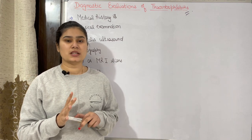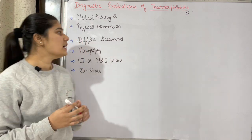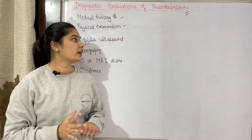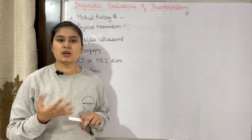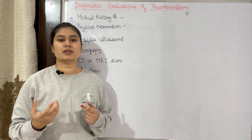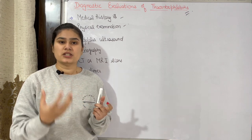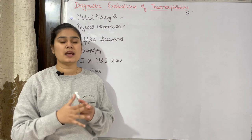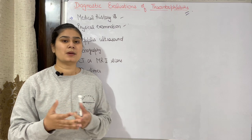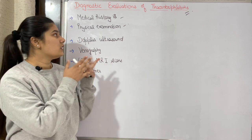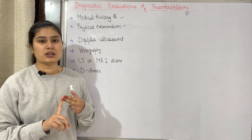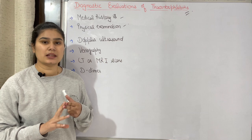How will we diagnose thrombophlebitis? First, medical history and physical examination. Medical history is important. We will ask if there were varicose veins or thrombophlebitis cases in the family history, since genetic factors can make a person susceptible. We will also ask the patient's height and weight, as obesity increases the chances of thrombophlebitis.